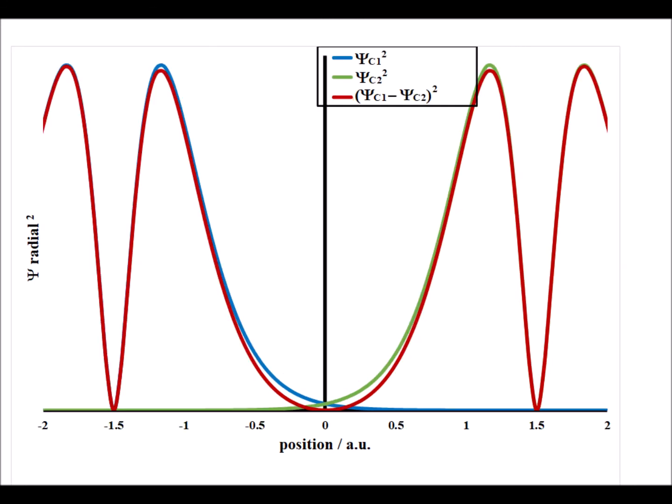For our final example, we have the electron densities for the two p orbitals on two different carbon atoms at minus 1.5 and plus 1.5. Shown in red, we have the electron density for the antibonding linear combination. We do see a reduction in the electron density compared to the individual atomic orbitals. Therefore, this antibonding combination will destabilize the system.